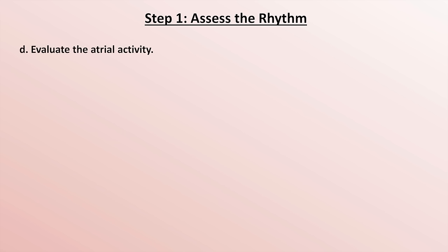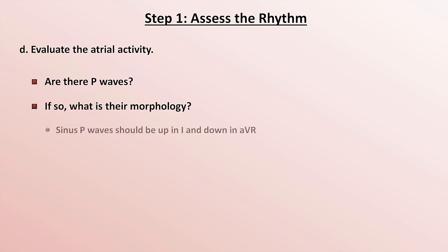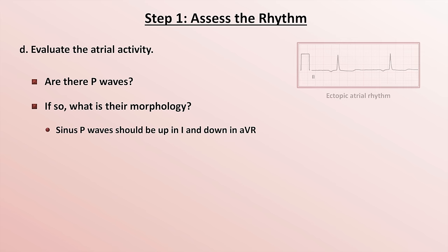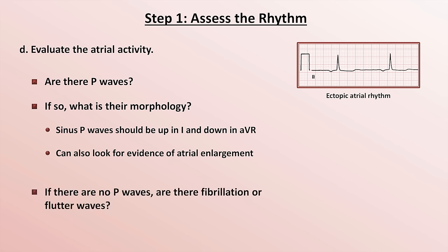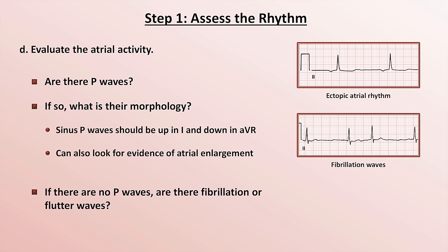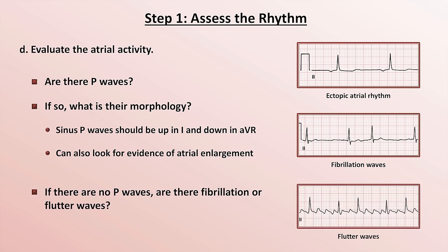Next, evaluate the atrial activity — specifically, look for P waves. If they're present, what is their morphology? Sinus P waves should be upright in lead I and down in aVR. If they do not display this polarity, it strongly suggests the P waves originate somewhere other than the sinus node. Also take a moment to look for evidence of atrial enlargement. If there are no P waves, look for fibrillation waves — typically very small amplitude, irregular undulations in the baseline — or flutter waves, typically described as sawtoothed and easiest to see in the inferior leads or occasionally in lead V1.